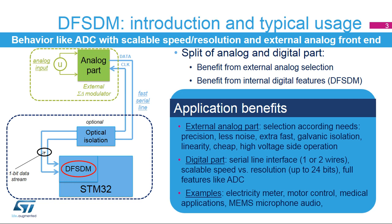This feature offers the possibility to choose a specific analog part according to the user's needs, like galvanic isolation for motor control or metering applications, a low-noise and high-precision analog part for sensor data acquisition applications, or a cheap analog part for price-sensitive applications. The analog part provides digitized data for DF-SDM. The digital part, represented by the DF-SDM peripheral, performs digital signal processing from external data.